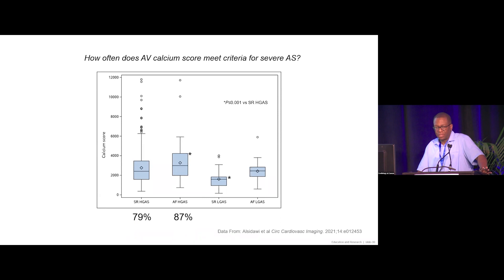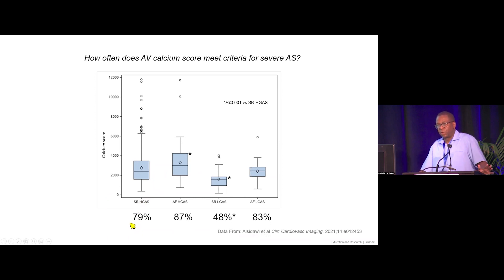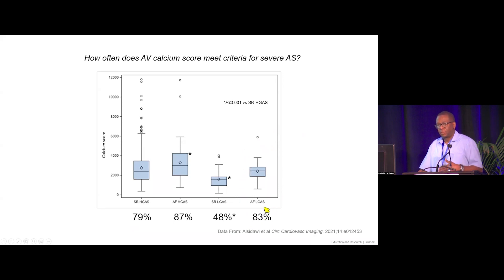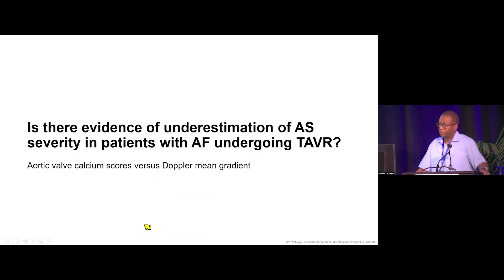That figure was 87% in AFib high-gradient AS, 48% in sinus rhythm low-gradient AS — significantly lower than classic high-gradient AS — and 83% in AFib low-gradient AS. Effectively, AFib low-gradient AS is severe aortic valve stenosis, and reliance on Doppler gradients in these patients leads to underestimation of severity.